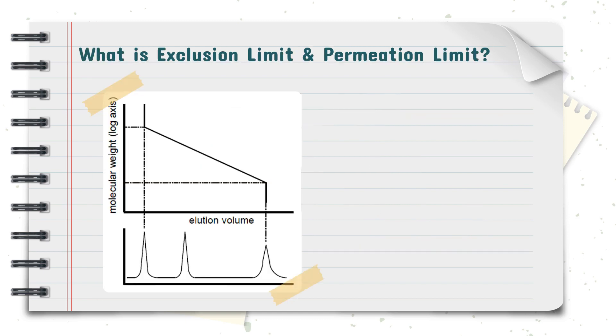For a packing with a given mean pore diameter, molecules larger than a particular size, known as the exclusion limit, are not able to enter the pores of the column and will elute out together with the solvent. The elution volume of these analytes will be the same as the void volume of the column.